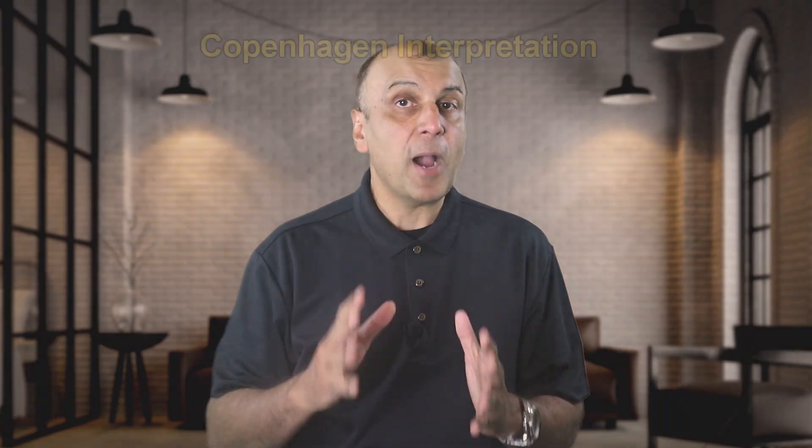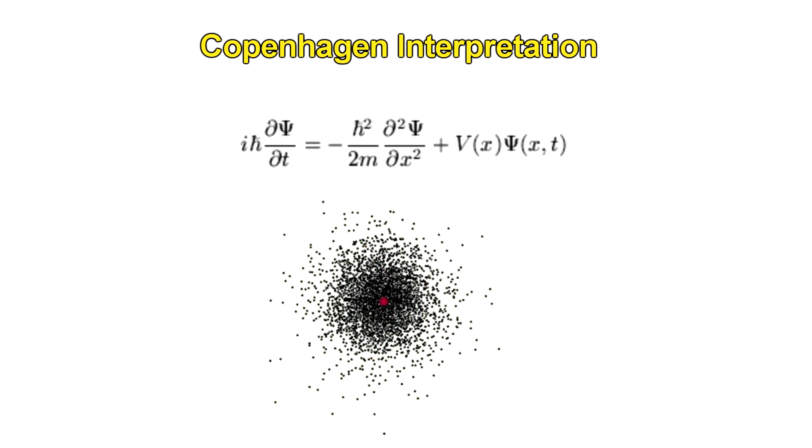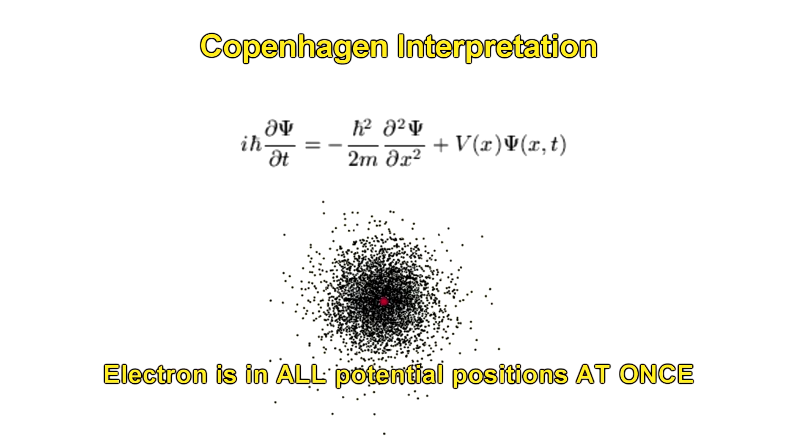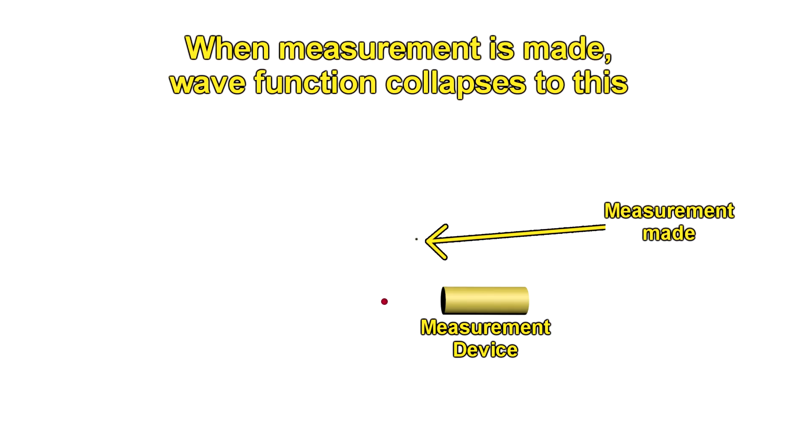The most accepted interpretation of the wave function, called the Copenhagen interpretation, was pioneered by two of the founders of quantum mechanics, Werner Heisenberg and Niels Bohr. This interpretation says that until a measurement is made, this equation tells us that the electron is in all the potential positions at once. This interpretation basically says that the wave function is not a real thing. It only describes mathematical probabilities. The only thing that matters is the measurement. That is the only time when the position, energy, or other property of the particle can be known. So when the measurement takes place, that's when we say that its wave function has collapsed. Because only at that point can we ascertain where the electron is, and what its properties are.